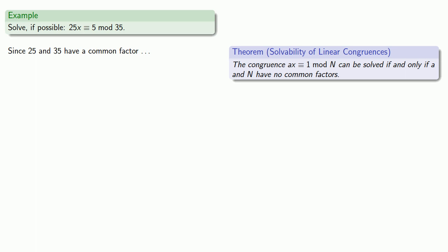And unlike cell phone contracts, theorems don't have microscopic fine print. It's all out in the open. And in this particular case, the theorem only applies to the congruence AX congruent to 1. But we're not solving 25X congruent to 1. We're solving 25X congruent to 5. And so the theorem is inapplicable.